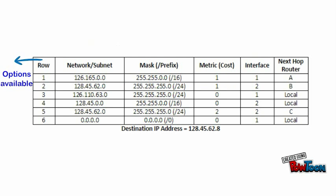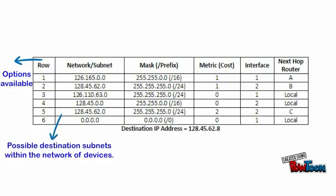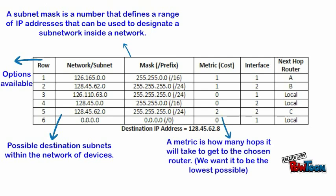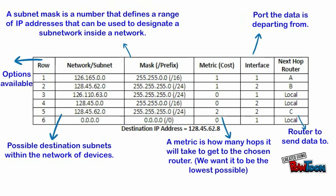Now let's put this information into a routing table. The first column shows the number of different options available. The network subnet column shows possible destination subnets within the network of devices. A subnet mask is a number that defines a range of IP addresses that can be used to designate a subnetwork inside a network. A metric is how many hops it will take to get to the chosen router — we want it to be the lowest possible. The interface is which port the data is departing from, and the next hop router column shows which router to send data to for each route option.